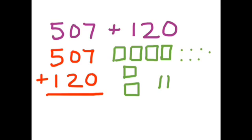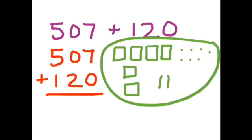All we need to do now is add this all together. When we do that, we can clearly see we have six hundreds, we have two tens, we have seven ones. So, five hundred seven plus one hundred twenty equals six hundred twenty-seven. Yay! Great job!